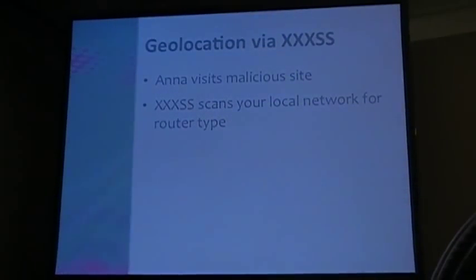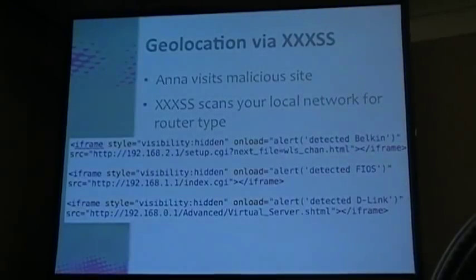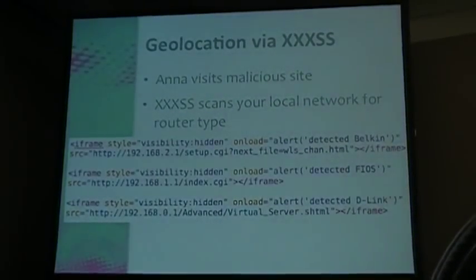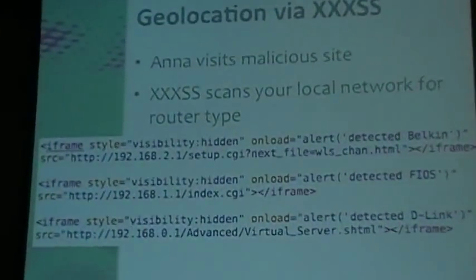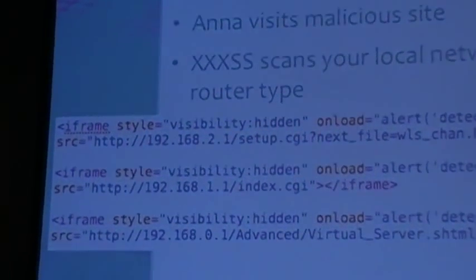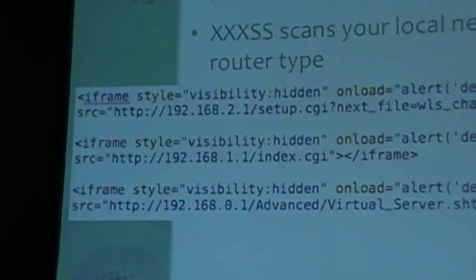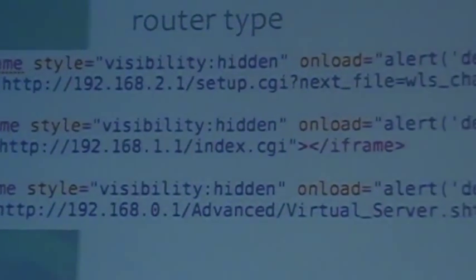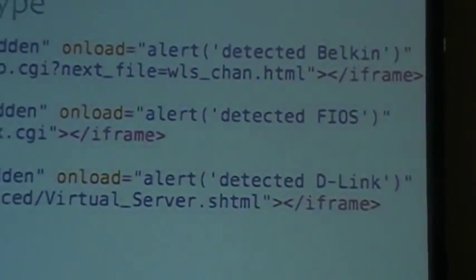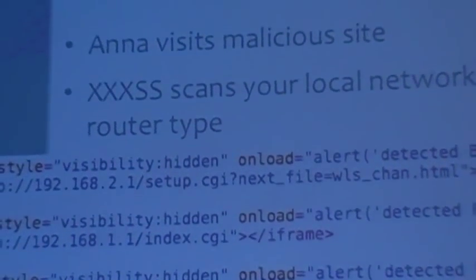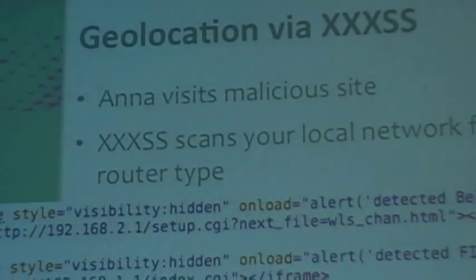How does it do that? It's actually really simple — this is old info. Create an iframe; that's just one way of doing it, there are many. Make it hidden, and you point it to a local IP hardware network address — something I can never access from outside, but you as a client within your NAT can access. So it's a 192.168 address, for example.